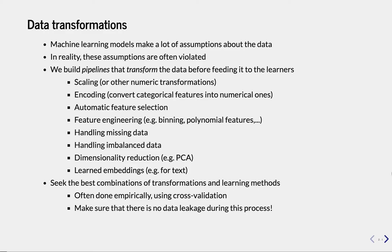Machine learning algorithms make a lot of assumptions about the data. They will, for instance, assume that the data is normally distributed, that the features are on the same scale, that there are purely numeric features, or contrary, only categorical features. And in reality, the data may look quite different. There may be all kinds of problems with the way that the data was collected, and these assumptions are violated.